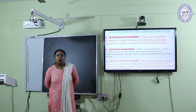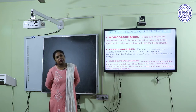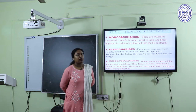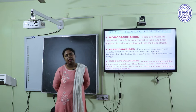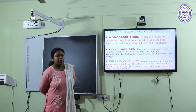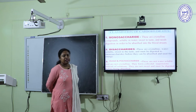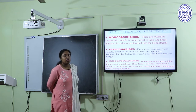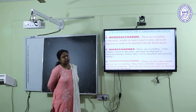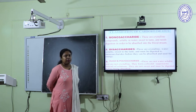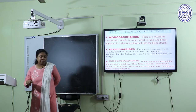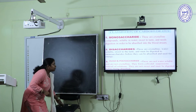Reducing sugars have the capability to reduce reagents like Fehling's reagent or Tollens' reagent, due to the presence of their free carbonyl group. Non-reducing sugars are not capable of reducing those reagents because they have no free carbonyl group. All monosaccharides like glucose, fructose, and galactose have a free carbonyl group and therefore possess reducing property. In the case of sucrose, there is no free functional group, so sucrose is a non-reducing sugar. However, lactose is a reducing sugar because it has a free carbonyl group.